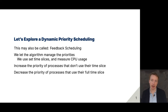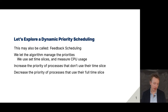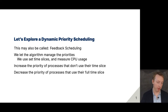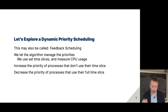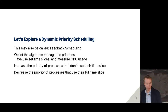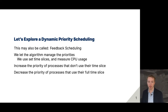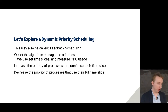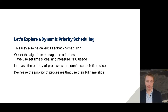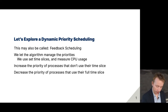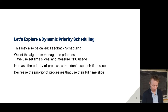This is a way to have priorities and let the algorithm manage the priorities for you. You just set an initial priority and then it adjusts them on the fly. For this algorithm, it uses set time slices and measures CPU usage across running processes. The idea is to increase the priority of processes that don't get any time in that time slice and decrease the priority of processes that actually get to run.